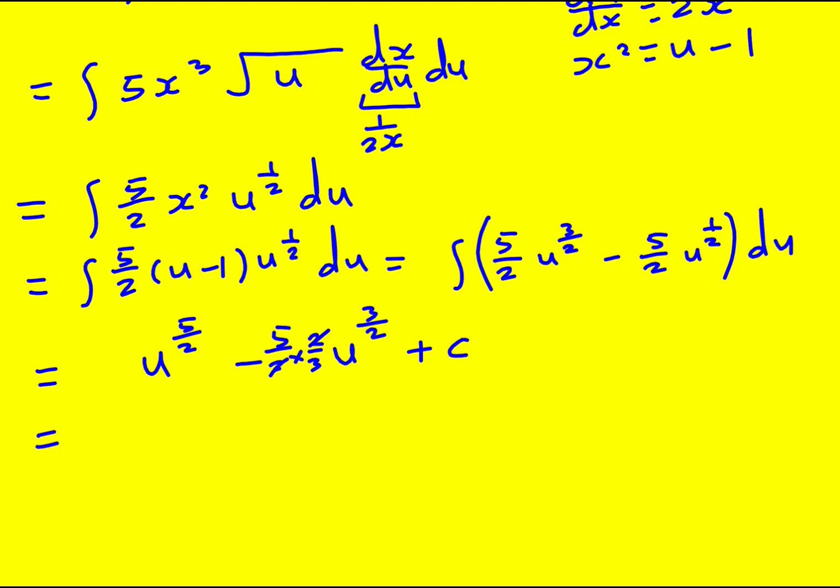I've got my plus c and I'm nearly there. Remember u is equal to x squared plus 1. So it's going to be x squared plus 1 to the 5 over 2 minus 5 over 3 times x squared plus 1 to the 3 over 2 plus c.